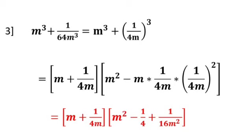In the second bracket, a² is m². Minus ab: a is m and b is 1/(4m), so m × 1/(4m) — numerator m and denominator m cancel — leaving 1/4. Plus b²: (1/(4m))² = 1/(16m²). So the factor of m³ + 1/(64m³) is (m + 1/(4m))(m² - 1/4 + 1/(16m²)).